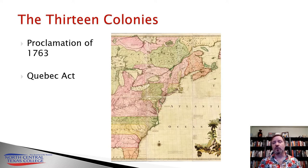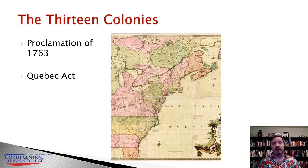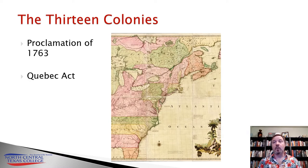When central rule was even attempted — for example, in the 1680s when James II tried to consolidate the New England colonies into the Dominion of New England under a governor named Edmund Andros — it led to a lot of backlash, revolts, and riots. Fortunately, it didn't last long because James II was overthrown in 1688 and William III restored the powers to the way they were before.